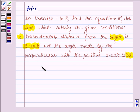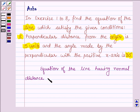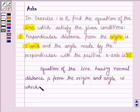First let us learn the equation of the line having normal distance P from the origin and angle omega which the normal makes with the positive direction of the x-axis.